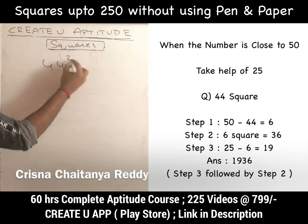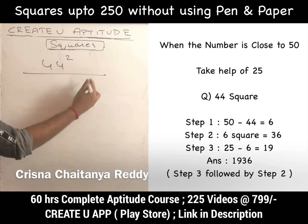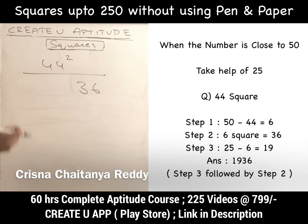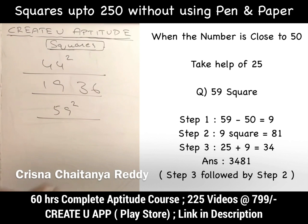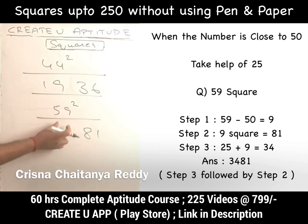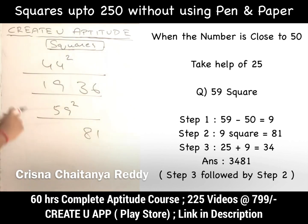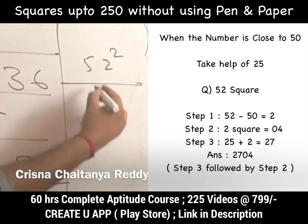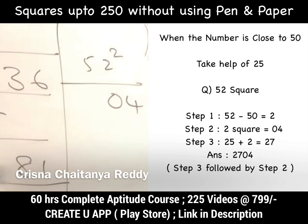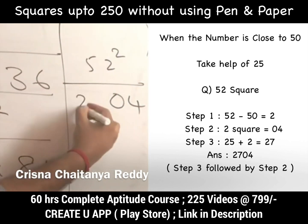Another example: 44² — it is 6 less than 50. 6² = 36; write 36. Then 25 − 6 = 19. So the answer is 1936. For 59²: it is 9 more than 50. 9² = 81; write 81. Since it is more than 50, add to 25: 25 + 9 = 34. Answer is 3481. For 52²: 2 more than 50. 2² = 04; write 04. 25 + 2 = 27. Answer is 2704.